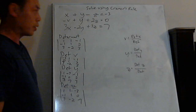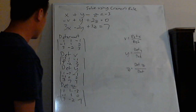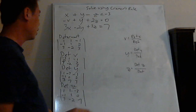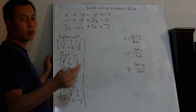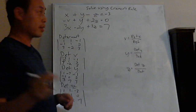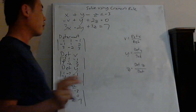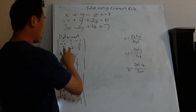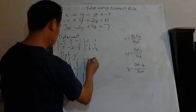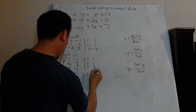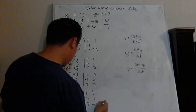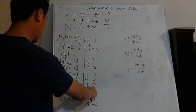Now I've got my four determinants set up in 3x3 matrices. The method I like to use is the columns method to find the determinant. What I do is copy the first two columns on every single one. If you don't know what I'm talking about, go watch my other video on the 3x3 matrix columns method.